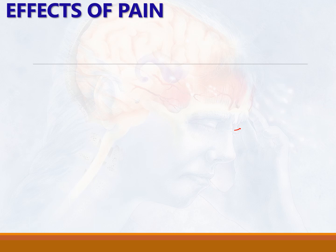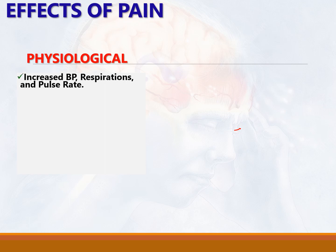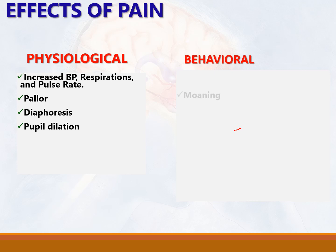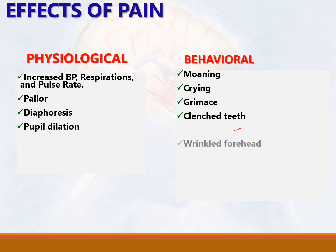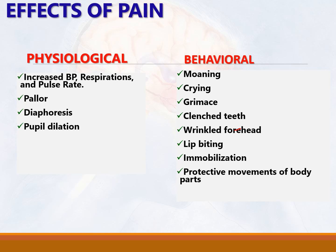The effects of pain include physiological effects — increased blood pressure, increased respiration, increased pulse rate, pallor, diaphoresis (excessive sweat), and pupil dilation — and behavioral effects such as moaning or crying, grimacing, clenching teeth, wrinkled forehead, lip biting, immobilization, protective movements of body parts, and avoidance of conversation.